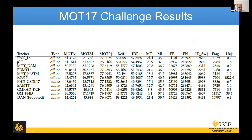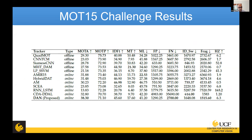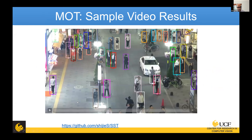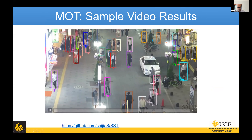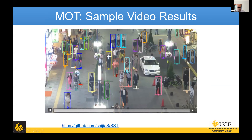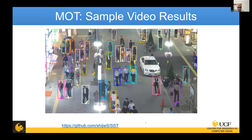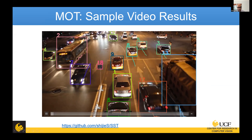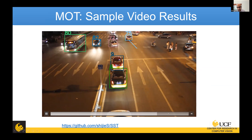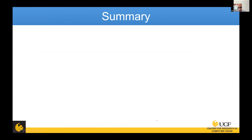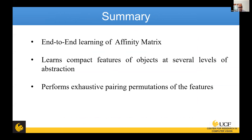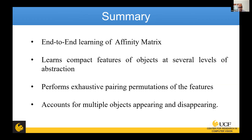These are results for MOT17 — we get pretty good results at the time of publication. This is on MOT15. We also applied it to vehicle tracking, which we call D-track, and that also works pretty well. These are some results showing pretty crowded scenes. In summary, we have this end-to-end affinity matrix learning that learns compact features of objects at several levels, performs exhaustive pairing of permutational features, and accounts for multiple objects appearing and disappearing.